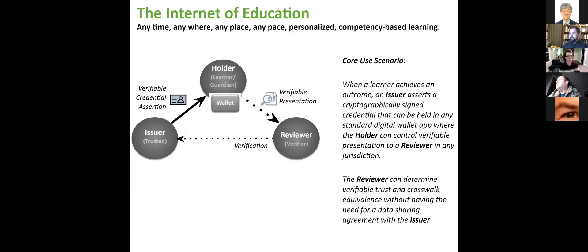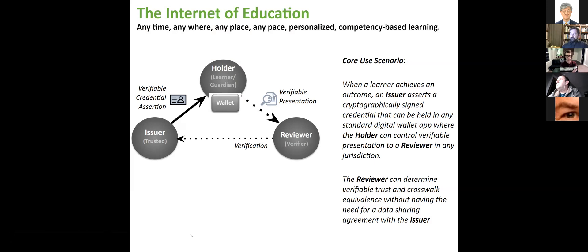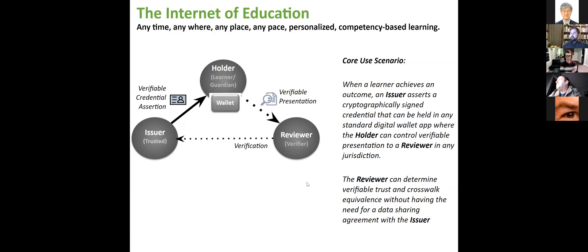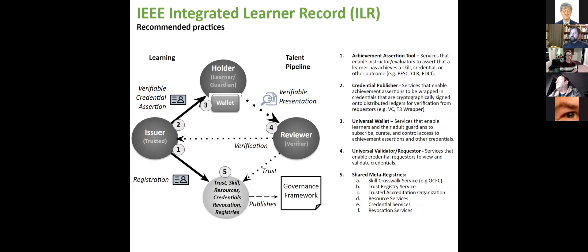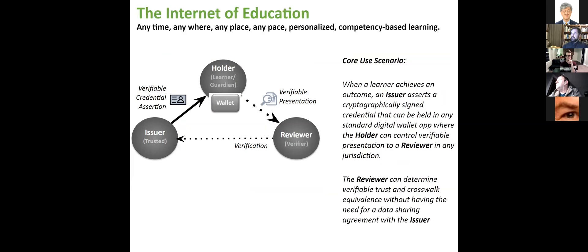The reviewer similarly is typically out of the network of the holder and the issuer. These are three different networks that, without having any data sharing agreement between them, are able to trust and exchange information across the open internet party to party. That is the premise of what this movement is trying to create, and it starts with a set of technical standards coming together in IEEE's Integrated Learner Record. We are in the process now and will be voting in January on a framework of five components that make this Internet of Education triangle work.